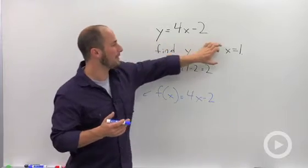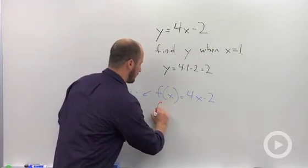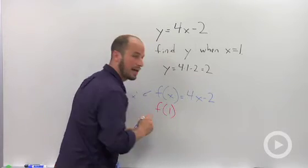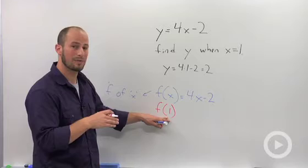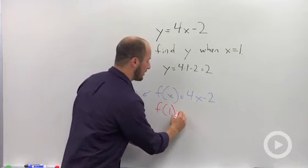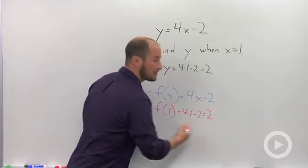So instead of saying find y when x is equal to 1, what we can actually write is just f of 1. So this is saying find y when x is equal to 1. We would do the exact same thing. 4 times 1 minus 2 is equal to 2.